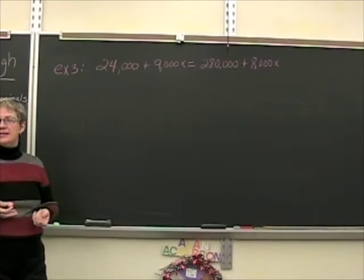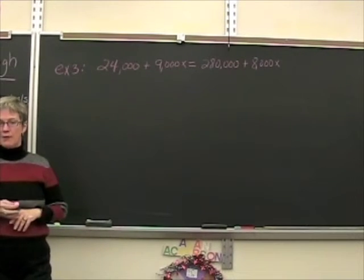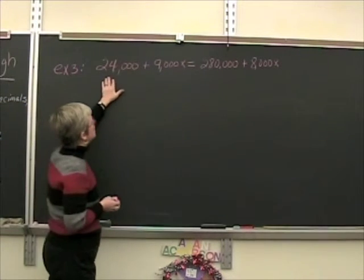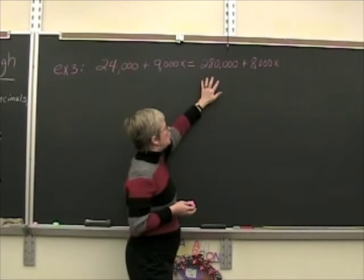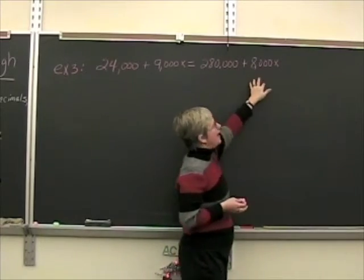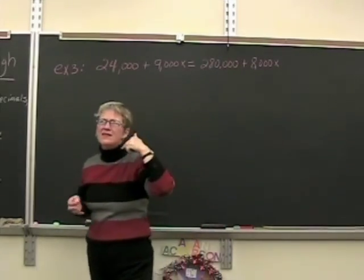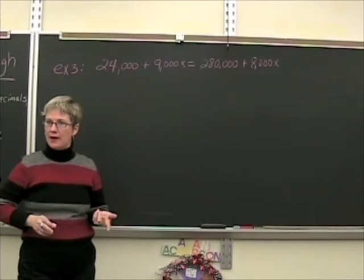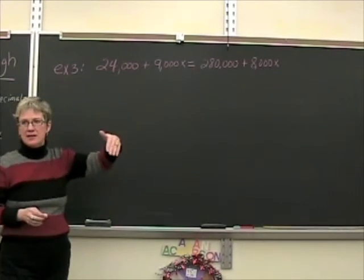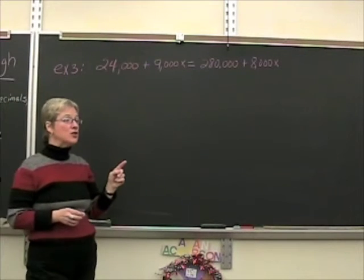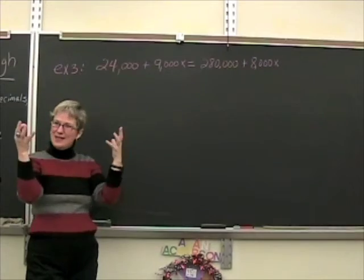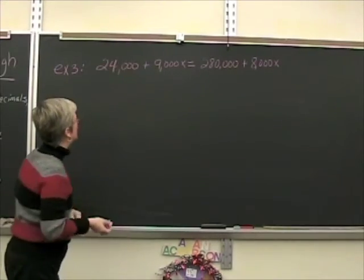All we need to do for this problem is find a number that will divide into 24,000, 9,000, 280,000, and 8,000. Each of these numbers is a multiple of 1,000, so therefore 1,000 will divide into each one evenly.